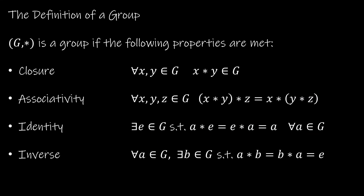So again, these are the four properties we have just checked with examples and non-examples. Closure: for all x, y in G, x star y is in G. Associativity: using all stars to make clear we're dealing with whatever the operation is. Identity: there exists some e in G such that a star e equals e star a equals a for all a in G, meaning there's just one identity. And the inverse: for all a in G, there exists some b in G such that a star b and b star a equal the identity — implying one identity and one inverse per element.